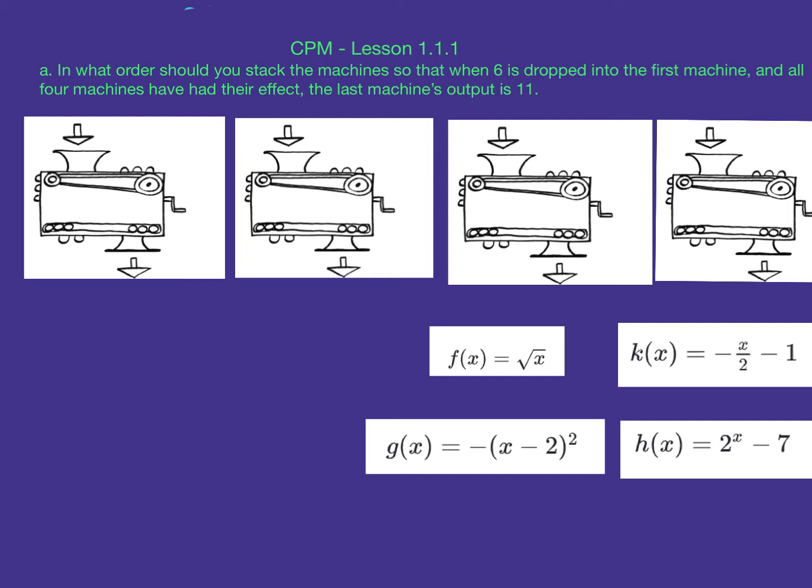Let's get into this problem. This particular problem is kind of like a puzzle. There are four different functions, and we have to put them in order so that when we have an input of 6 into the first one, the output after putting them through all four functions equals 11.